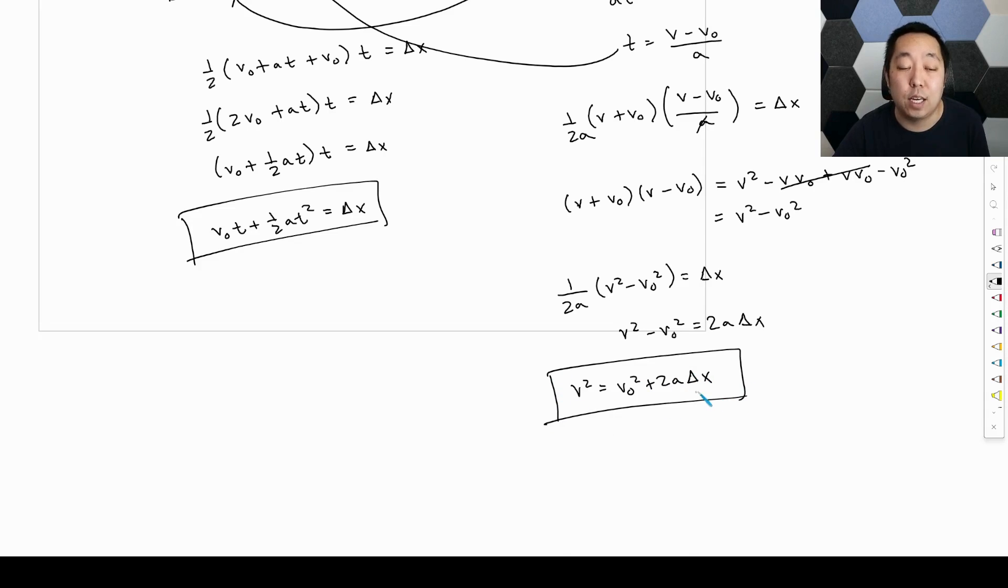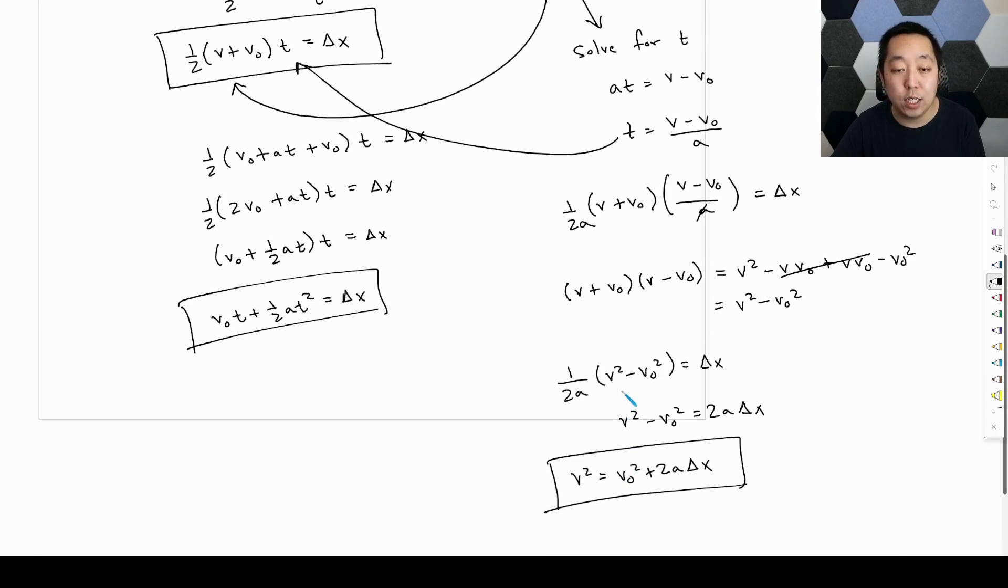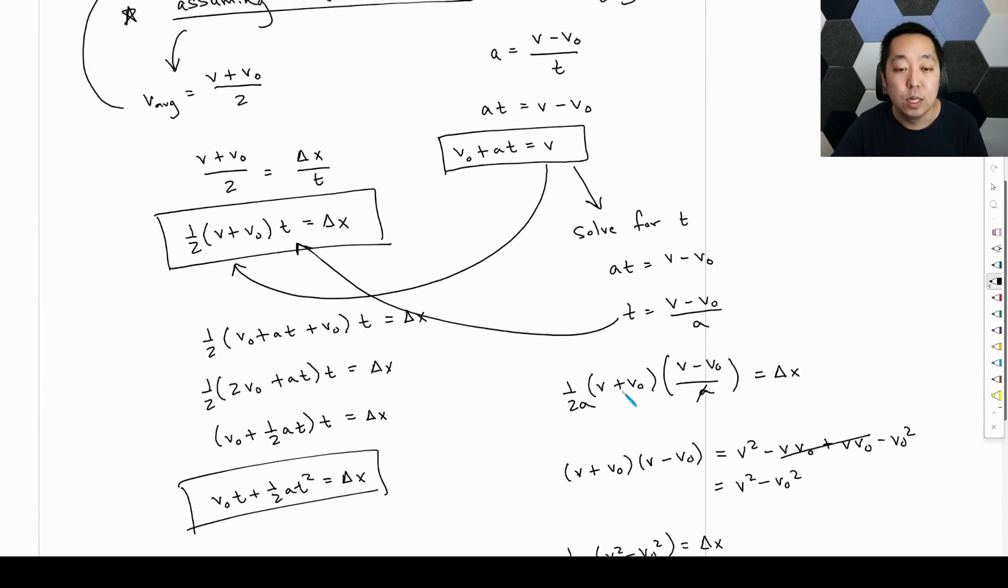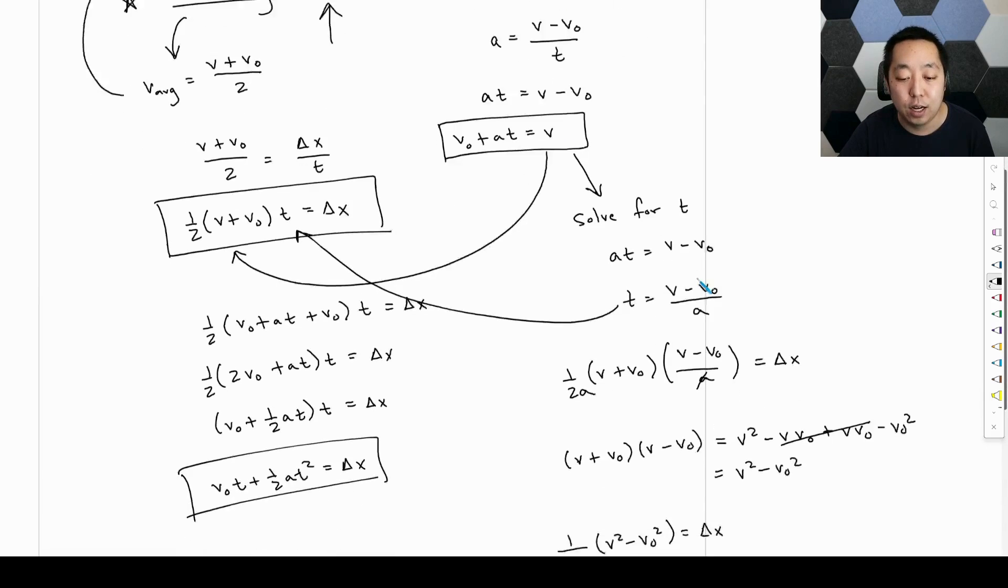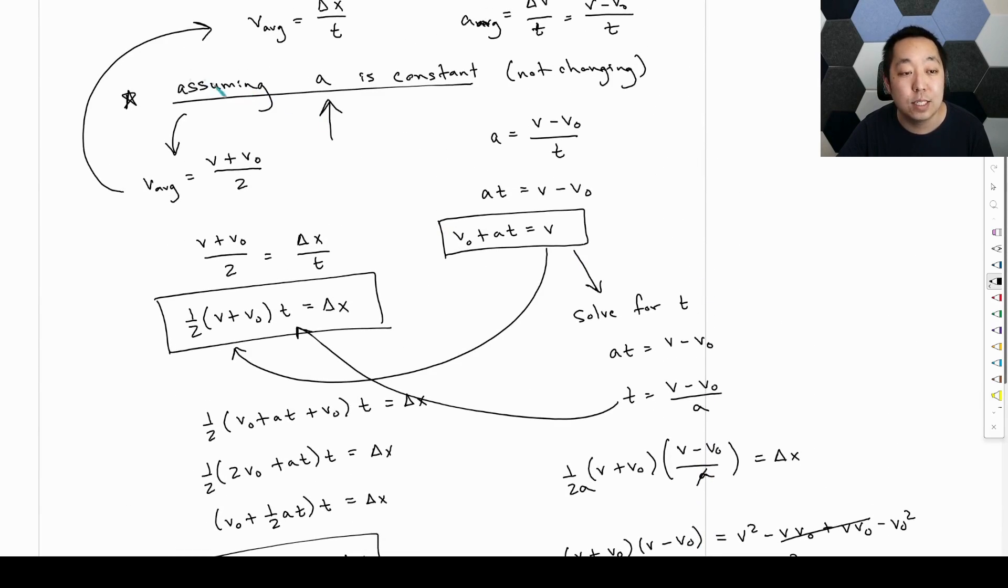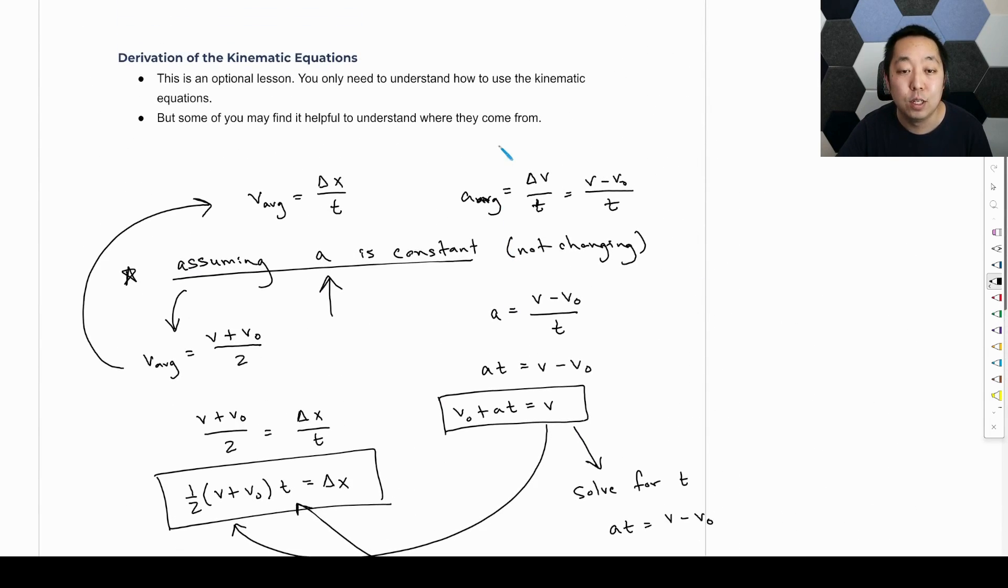OK, and so those are the four kinematic equations. We're just mostly going to use them. You don't need to derive them, but they all stem from the fact the derivation is based on the fact that the acceleration is constant. It is a fixed value. It's not changing. And so without that, like all the derivations for it fall apart. Right. This assumption is super, super critical, which is why we can only use the kinematic equations when the acceleration is constant.